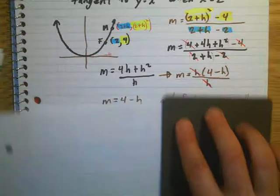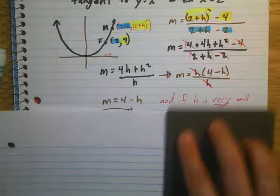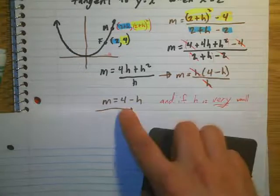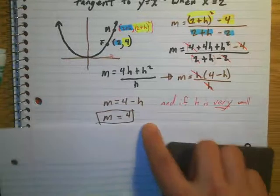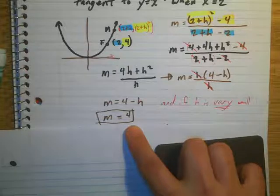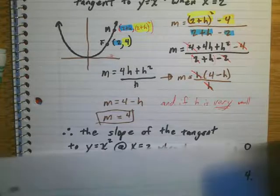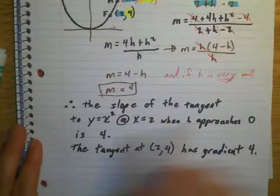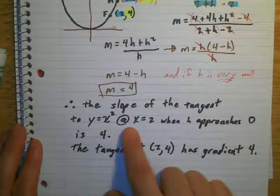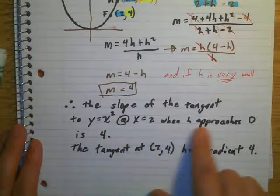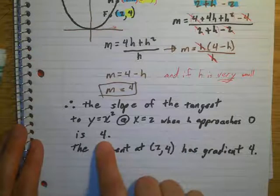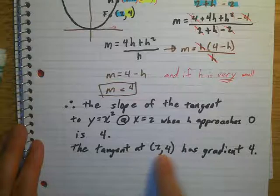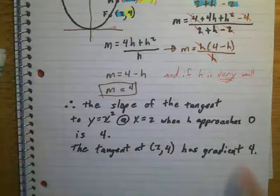If h is very, very small — let's just say h is 0 — then what's my slope? My slope is going to be 4. So therefore, the slope of the tangent at y equals x squared at x equals 2, when h approaches 0, the slope is going to be 4. The tangent line at the point 2 comma 4 has a gradient of 4.